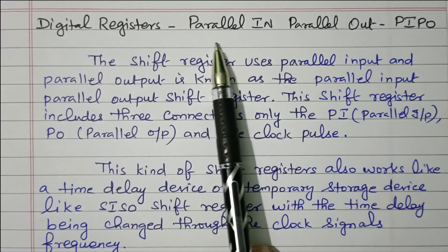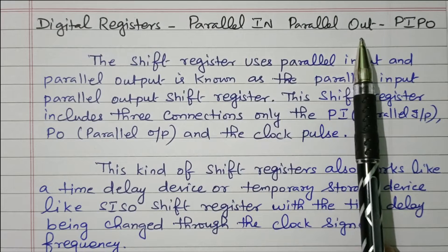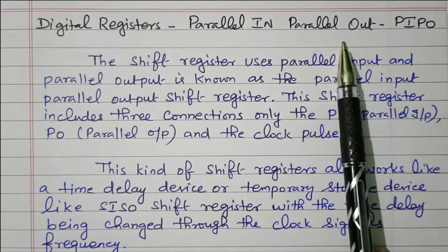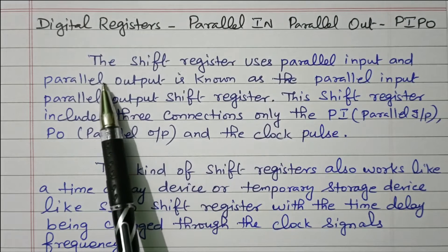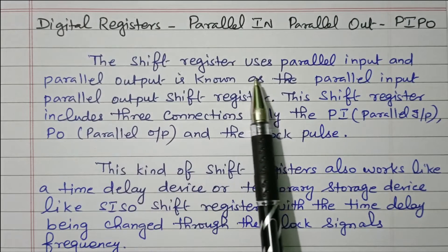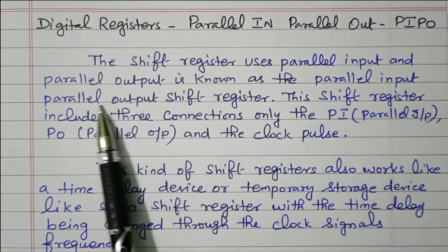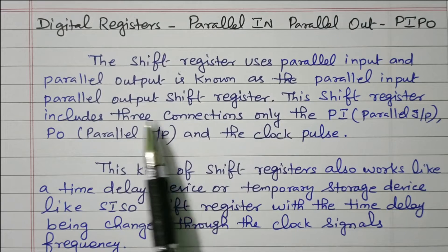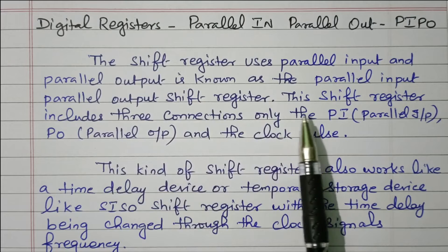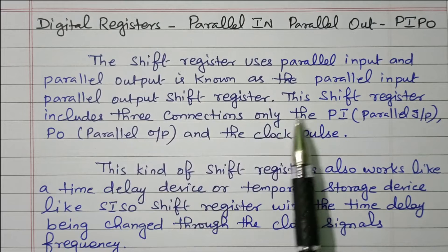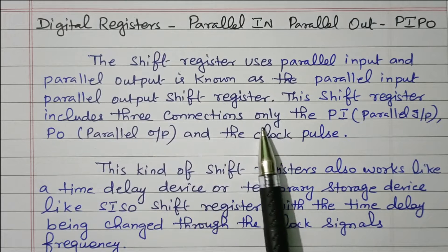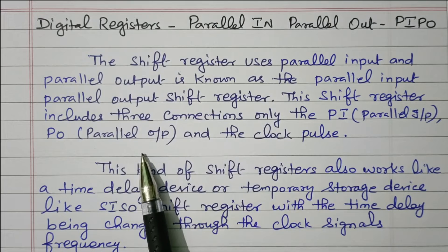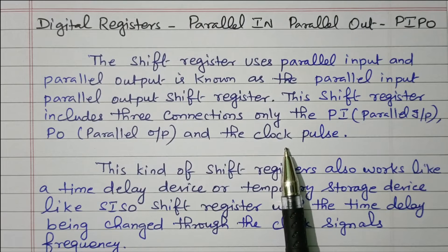Digital register — the type is parallel in and parallel out. Data is given parallelly and taken also parallelly. The shift register that uses parallel input and parallel output is known as a parallel input parallel output shift register. This shift register includes three connections only: the parallel input, parallel output, and clock pulse.